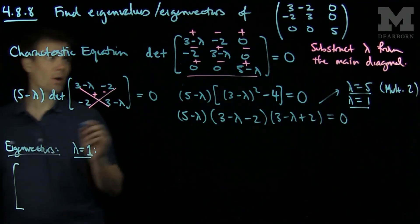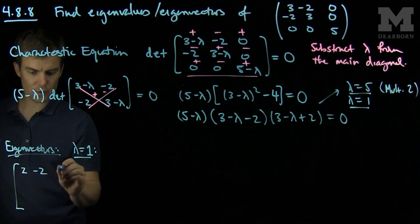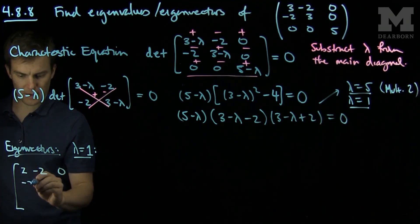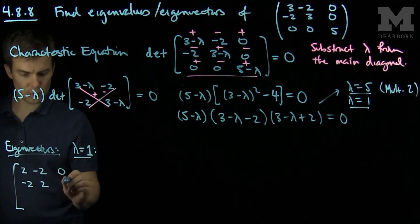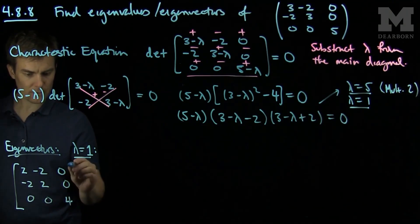When lambda equals 1, we will subtract off 1 from the diagonal and get: 2, negative 2, 0, negative 2, 2, 0, 0, 0, and 4.